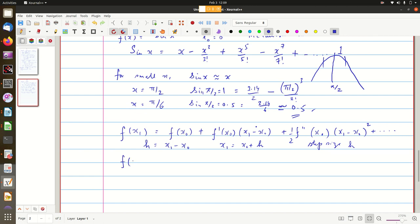So we can write it as f of x0 plus h equal to f of x0 plus f dash of x0. Now x1 minus x0 is h, so times h.